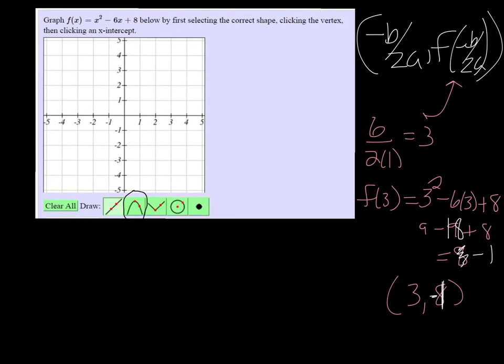So 3, negative 1. That's our vertex, so you click on that point to get your vertex. And immediately it's going to want that second point.